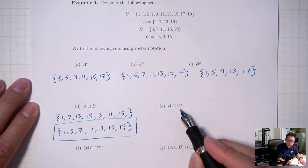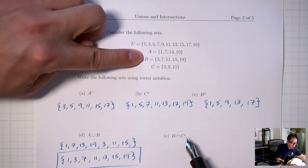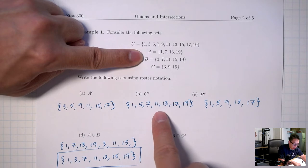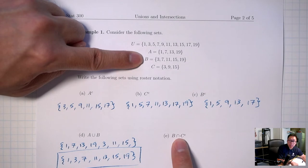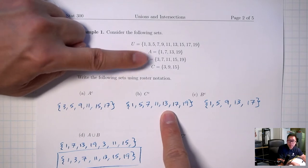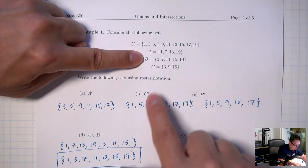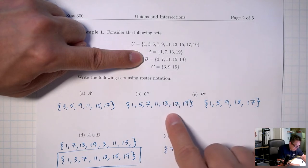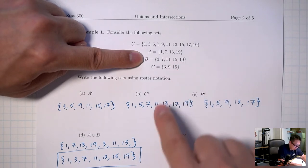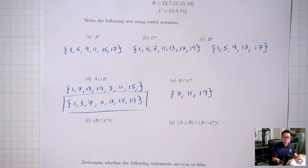Next up is B intersect C complement. Be careful — this is not regular C, this is C complement, which we already found. Regular B and C complement — this is asking for the intersection, so that's the overlap. Intersection means I want the numbers that are in both sets at the same time. I see 7 in both, and 11 in both, and 19 in both. So B intersect C complement is {7, 11, 19}.